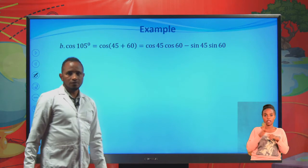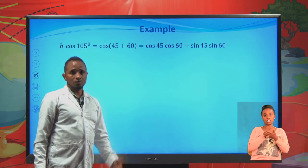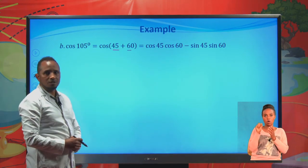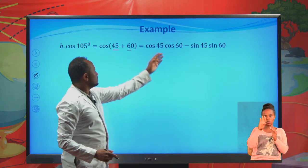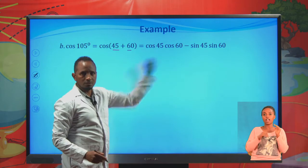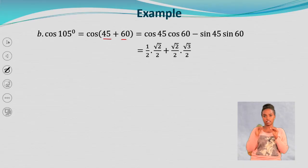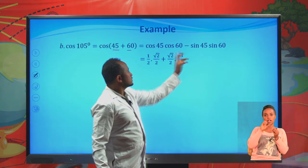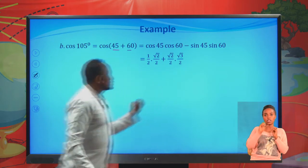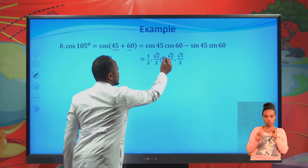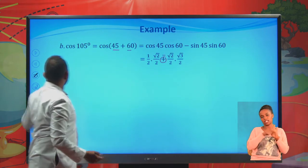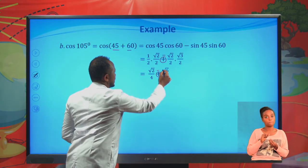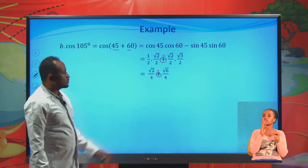For cosine 105, we write it as cosine of 45 plus 60. Using the formula: cosine 45 cosine 60 minus sine 45 sine 60. Cosine 60 is one half, cosine 45 is root 2 over 2, sine 45 is root 2 over 2, and sine 60 is root 3 over 2. This gives root 2 over 4 minus root 6 over 4.